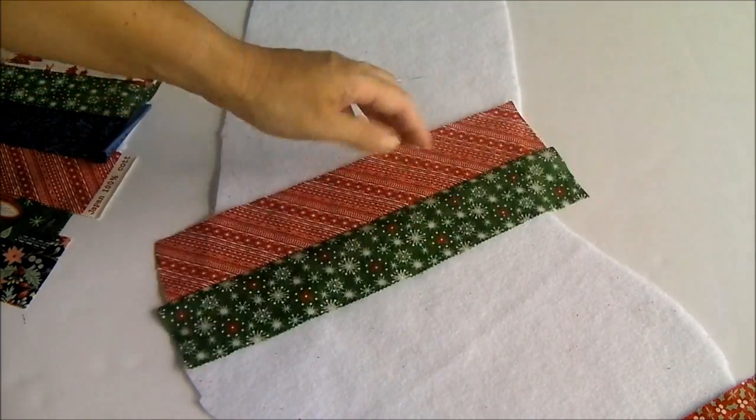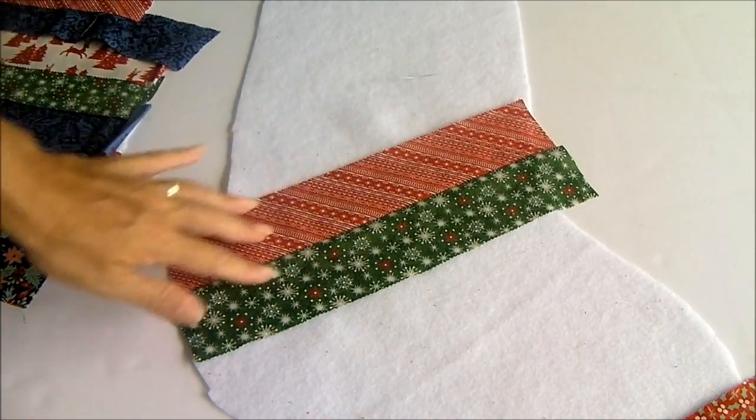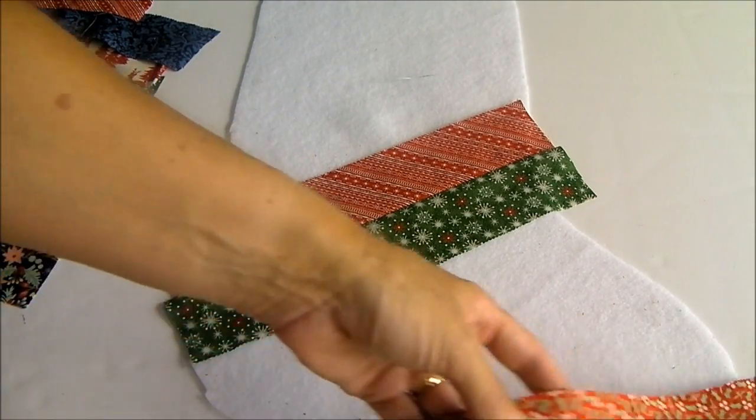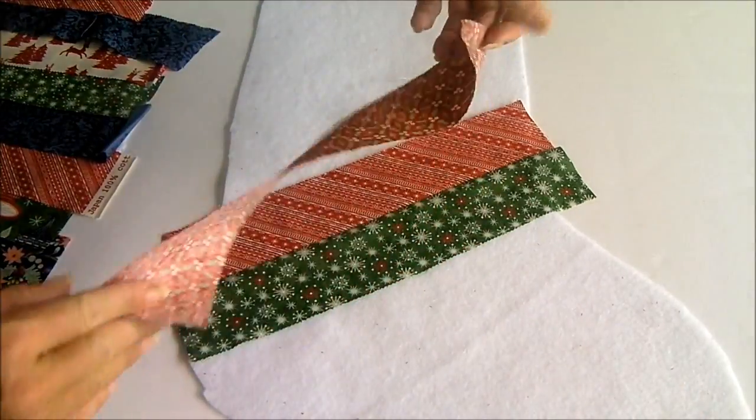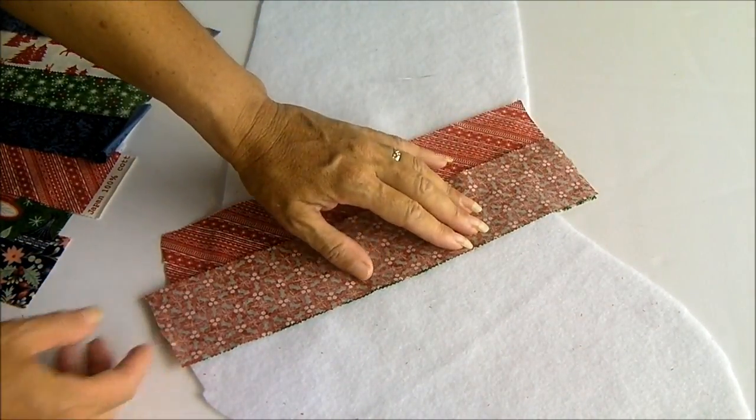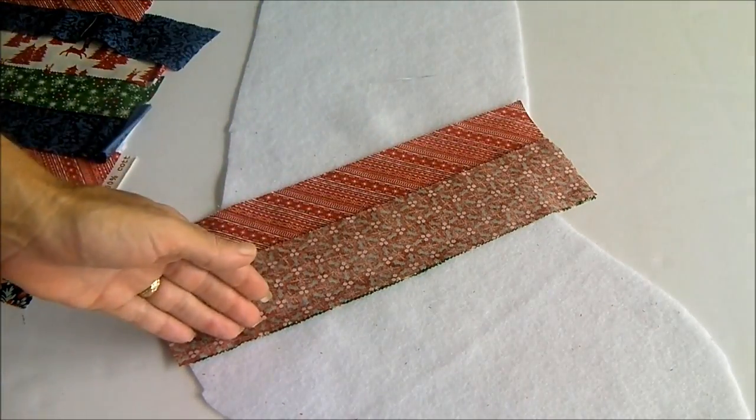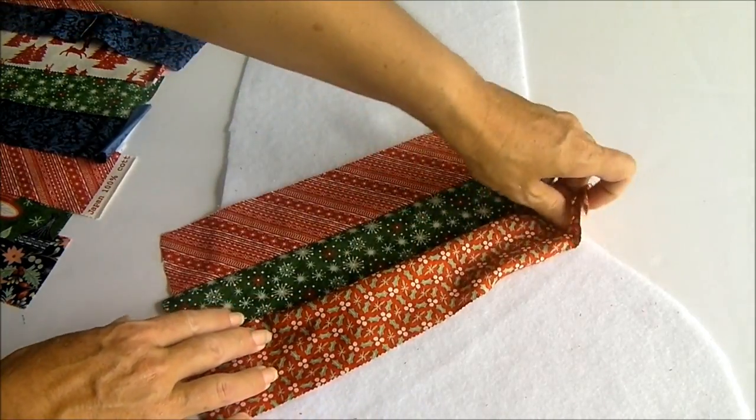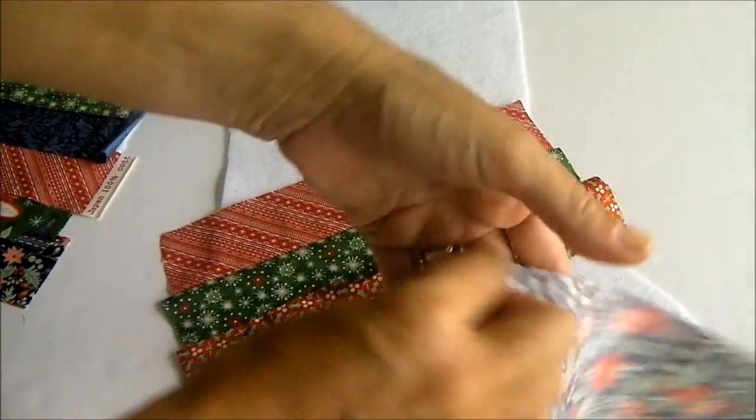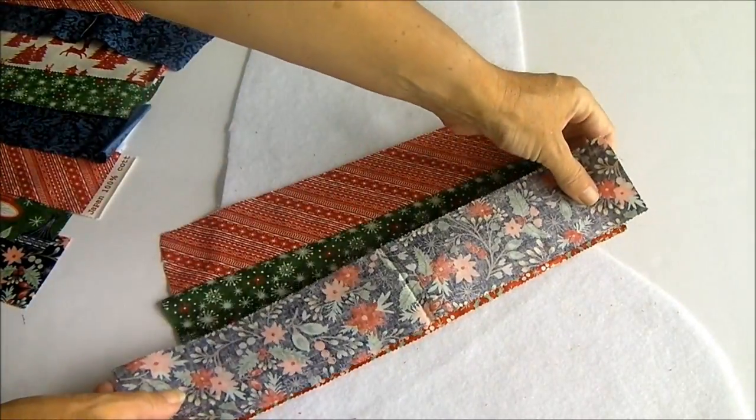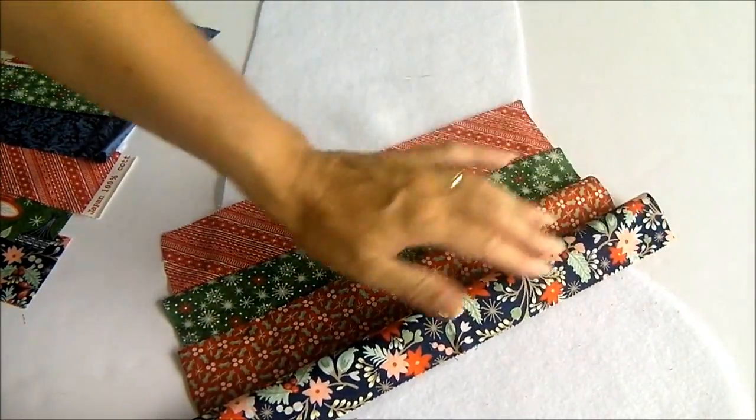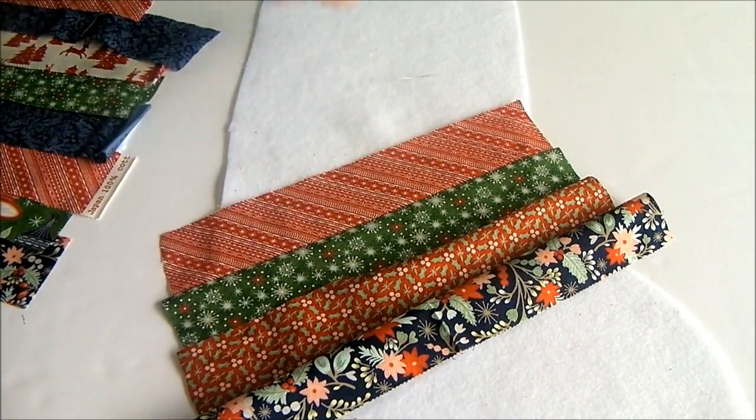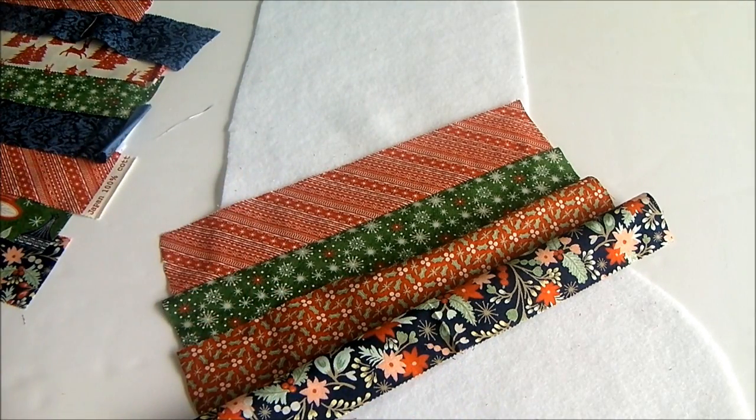So our first two strips are now sewn and if you open them out and give them a press there we go like that. So we can now work either up or down doesn't matter which and you'll take the next strip off your pile and lie it face down matching the right sides and matching the raw edges and sew this one with a quarter inch seam. As you turn that one out you press again and so on and as you go you'll work all the way down to the bottom and then work on this side all the way up to the top until all of your strips are sewn onto the backing.